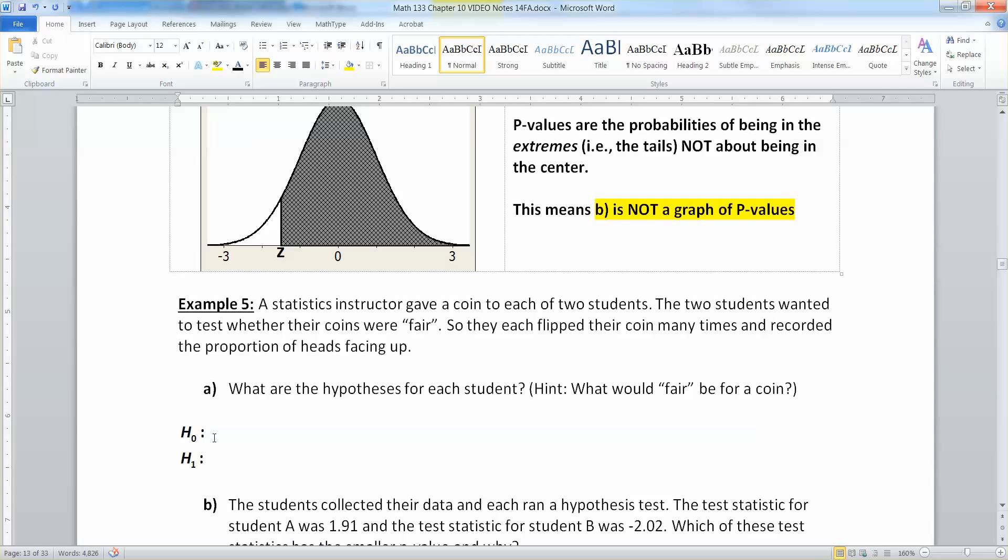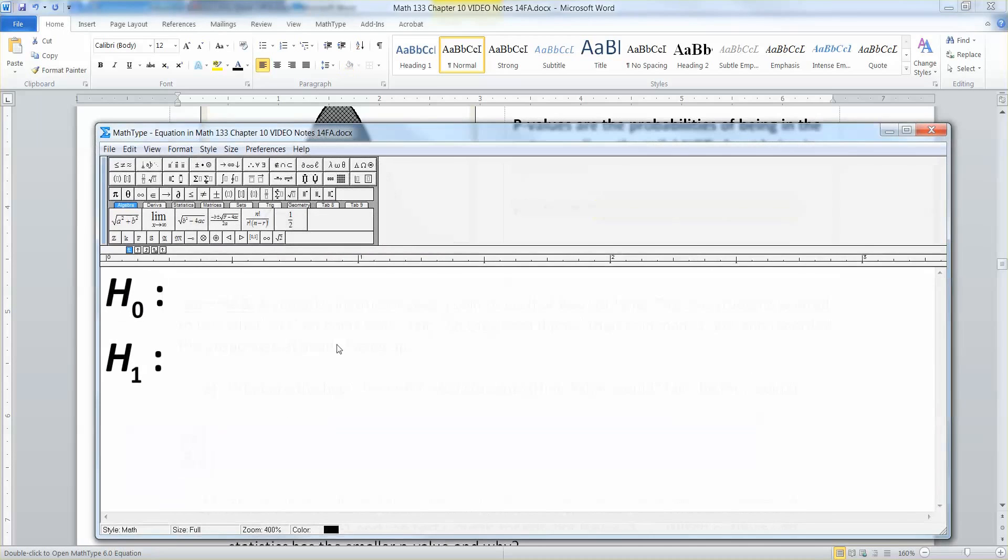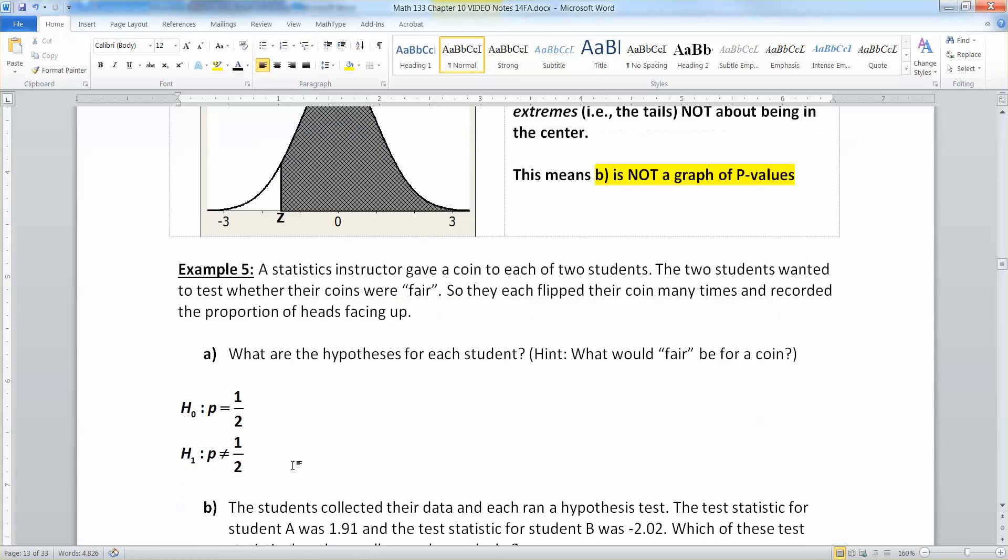So they're concerned about the proportion of heads because if it's fair, this will be your hypotheses. If you have a fair coin, what will be your proportion of heads? Since it's a coin, the proportion of heads will be one out of two, which is 0.5. If it's not fair, then the proportion will not be 0.5, or one out of two.